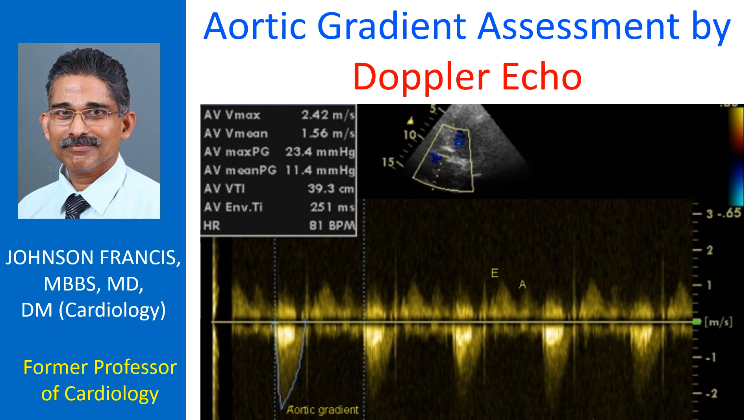Normal gradient across the aortic valve can be measured by pulsed Doppler echocardiography as the gradients are low. In the presence of aortic stenosis, the gradients are high and require continuous wave Doppler or high pulse repetition pulsed Doppler to measure trans-aortic gradient, as the velocities are above the Nyquist limit of conventional pulsed Doppler echo. The Nyquist limit is half the pulse repetition frequency.